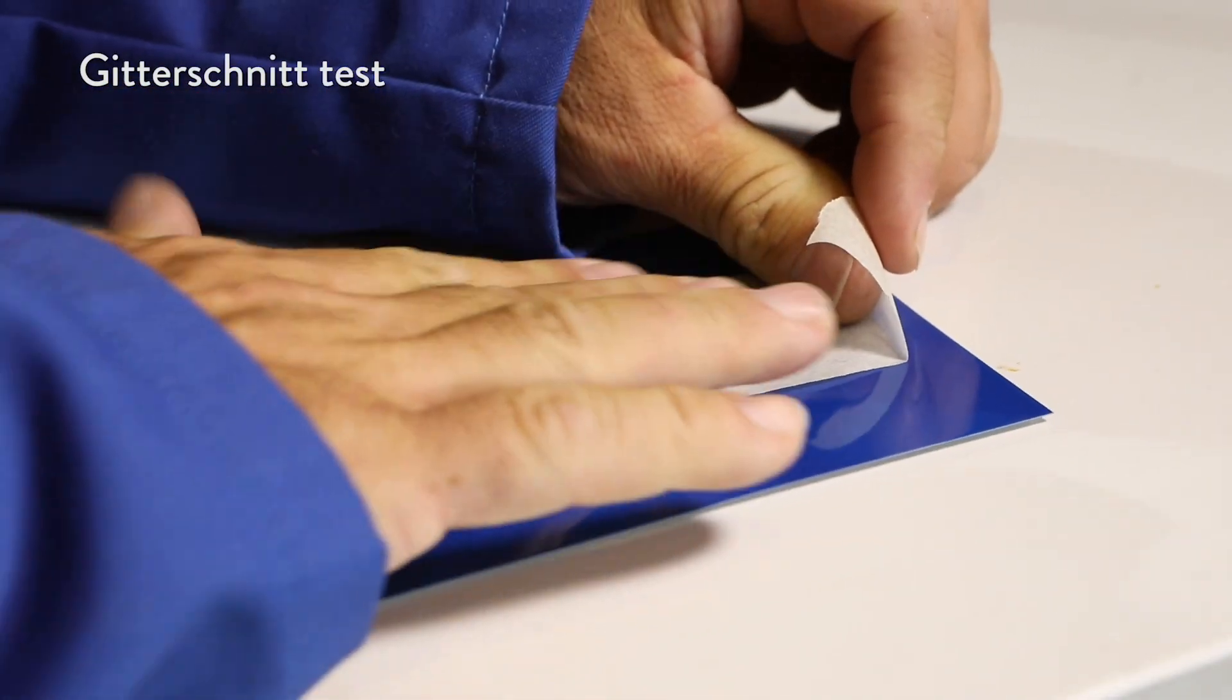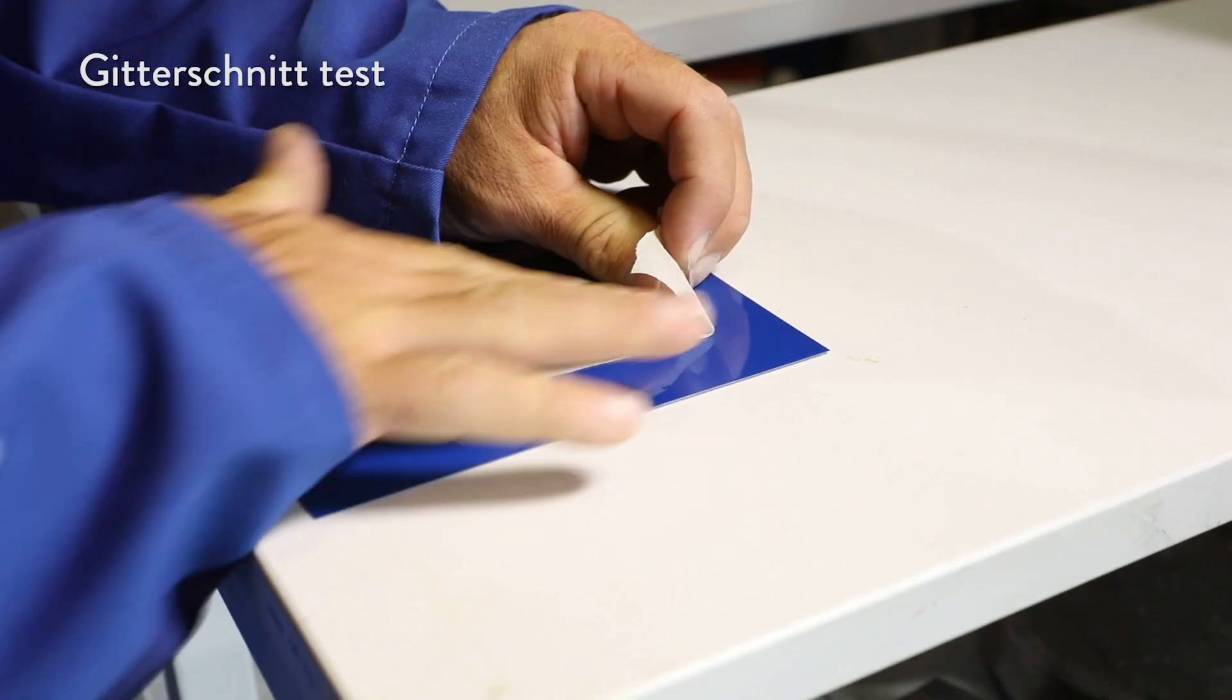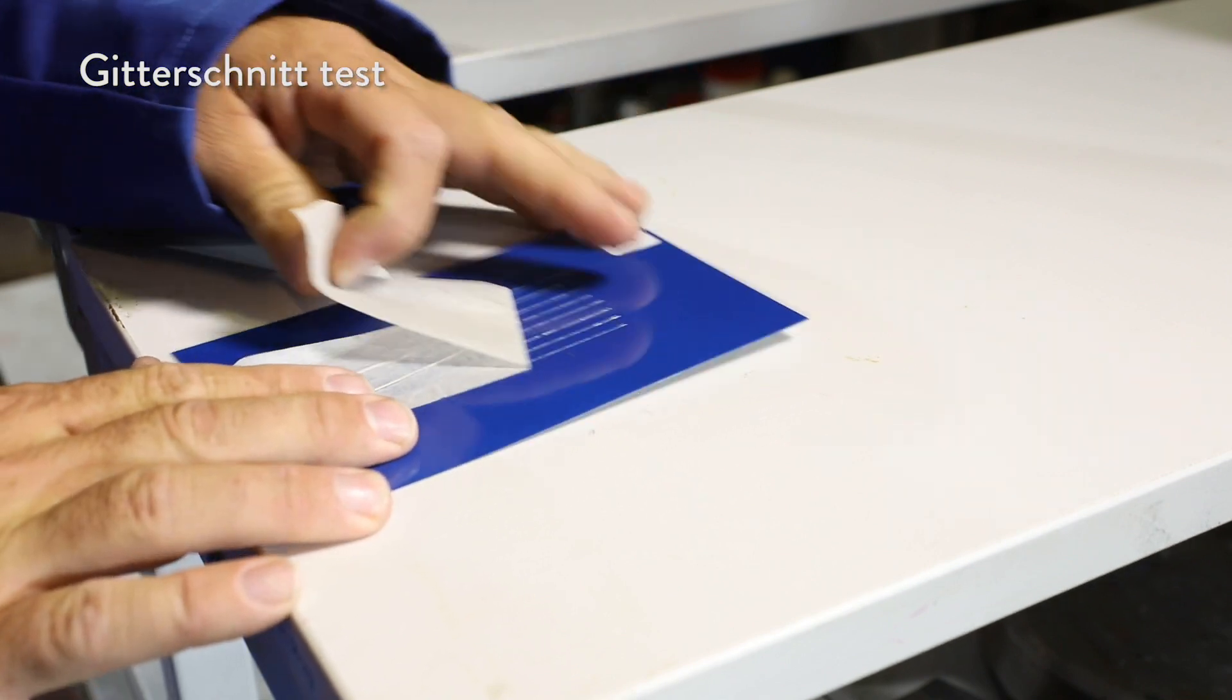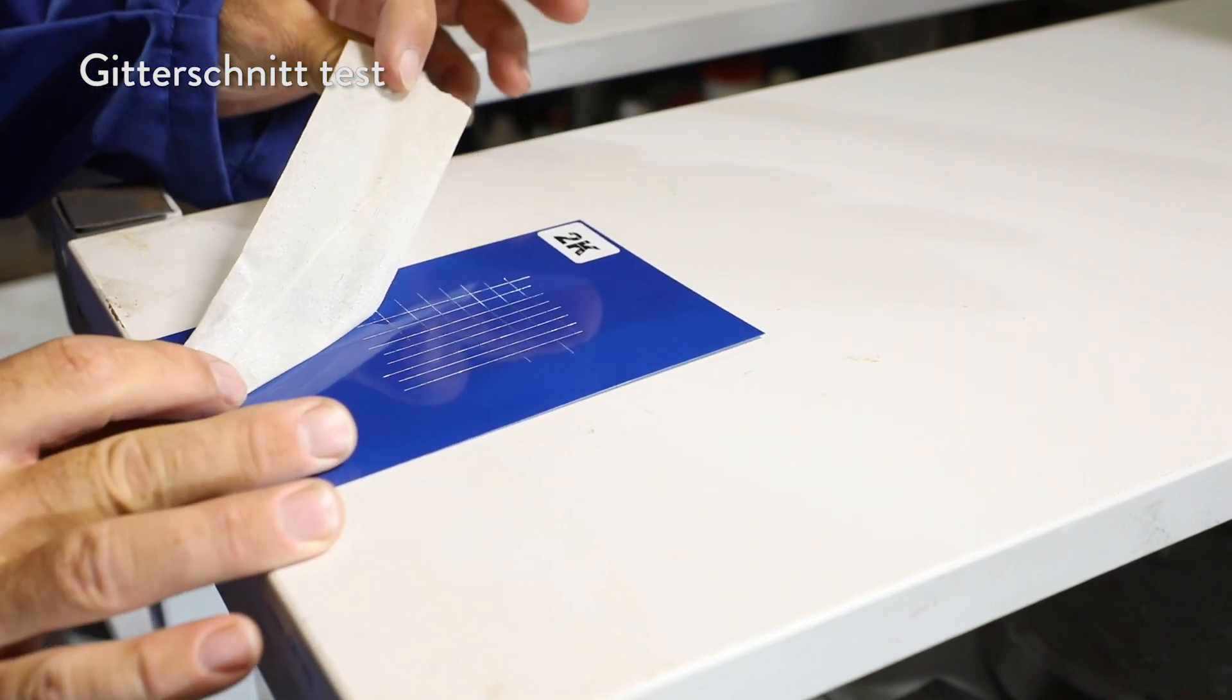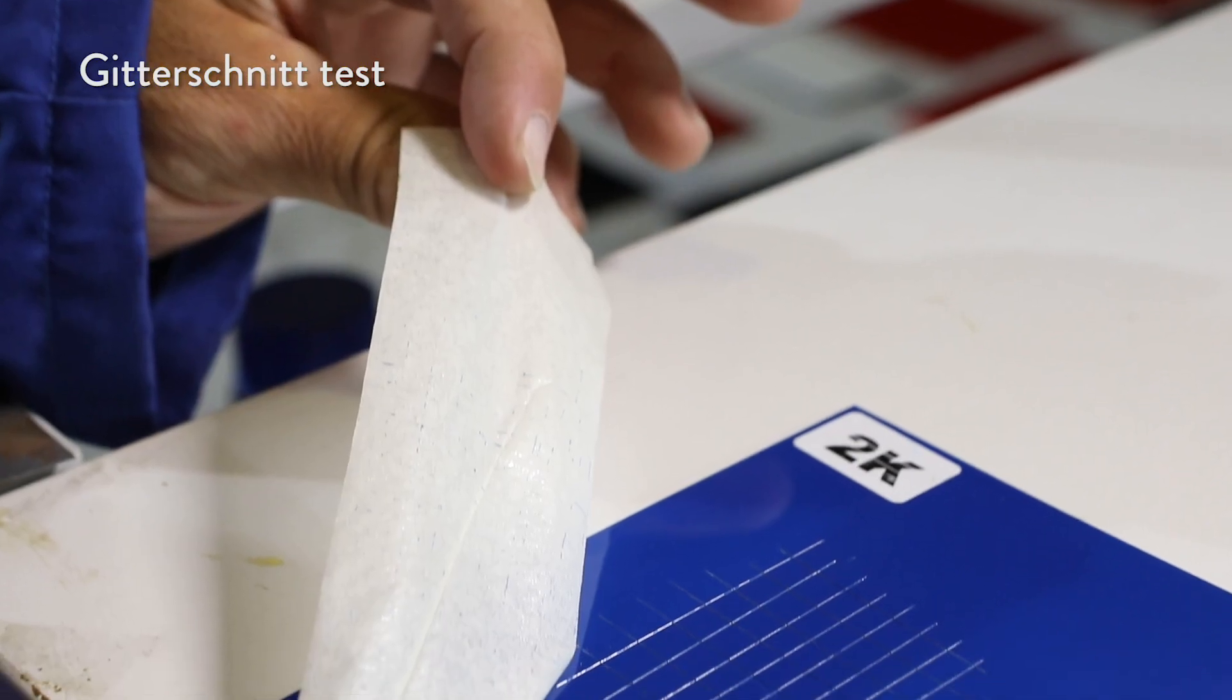The results of Gitter-Schnitt tests on a 2K painted tin plate are excellent. The coating bonds also on aluminum, galvanized metal, copper and chrome.